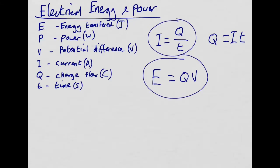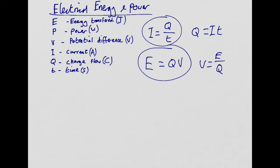Energy transferred in a circuit is given by, you just take the charge flow, and you just multiply it by the potential difference. Remember, voltage is just the amount of energy that you give to each of the charges, E divided by Q. Rearrange that and you get that.